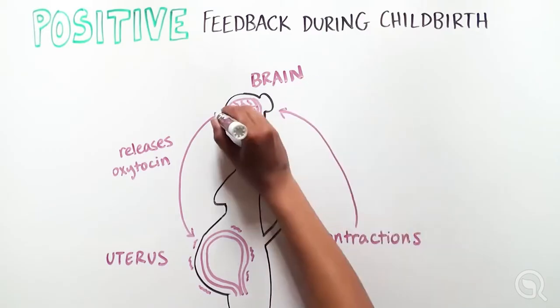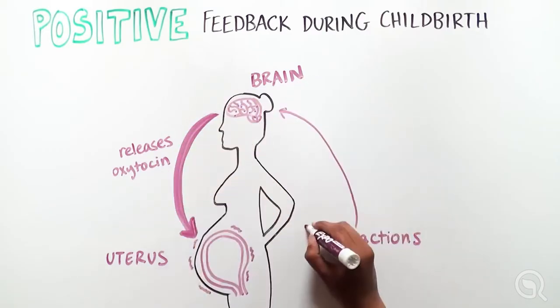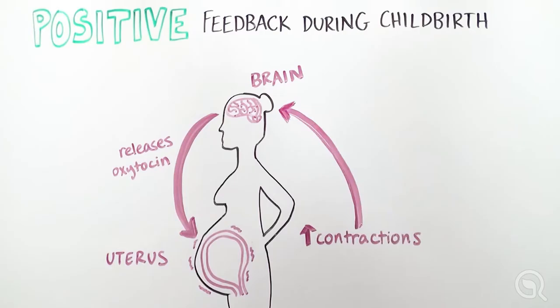These contractions trigger the brain to produce even more oxytocin, which leads to even more contractions, helping to push the baby out of the uterus. And this process continues until the baby is delivered.